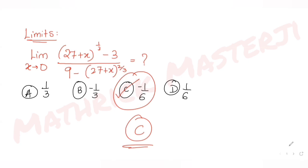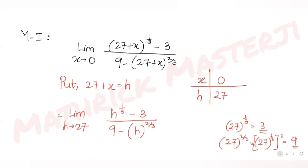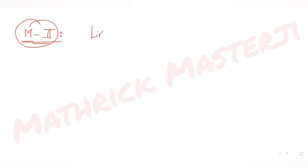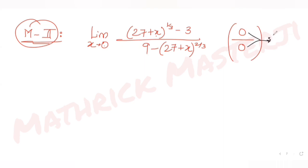Now let's look at the second method. Writing the limit again: x tends to 0 of (27 + x)^(1/3) − 3, divided by 9 − (27 + x)^(2/3). If I substitute x = 0, the numerator gives 27^(1/3) − 3 = 3 − 3 = 0, and the denominator gives 9 − 27^(2/3) = 9 − 9 = 0. So this is a 0/0 indeterminate form.